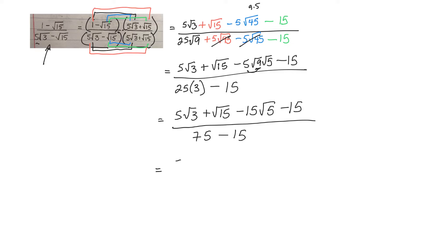So the last thing I'll do is 5 root 3. None of the things on the top have a common radical or are like terms. So I just have to write them all. But on the bottom, of course, I can subtract those.